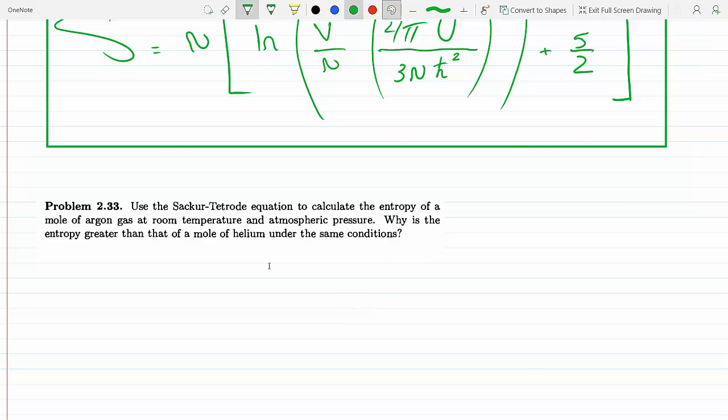We know that the ideal gas law is PV equals nRT with n being the number of moles. Here we have one mole, so n equals one, and we will get V equals RT over P.